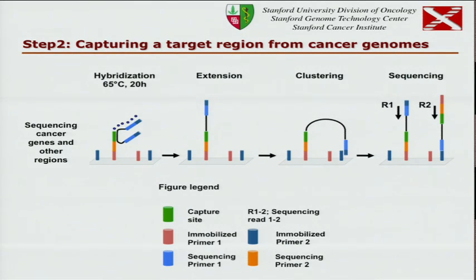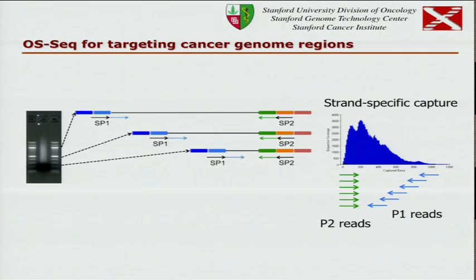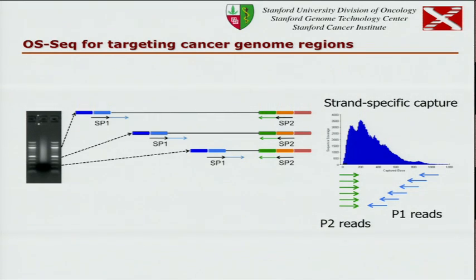Then you can do read one, read two — you can do paired-end sequencing. When you do that, read two always reads the capture sequence. That's actually useful for binning the mid-pair reads and doing assemblies afterwards.